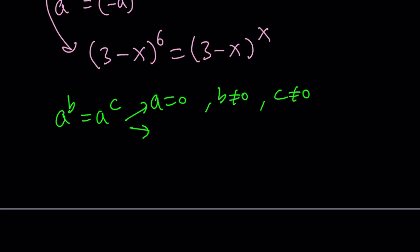The next thing we're going to look at is a can be negative 1, but in this case, b and c must be even, because negative 1 raised to an even power is always positive 1, so they're equal. Or a can be 1, and we don't care about b and c, because any power of 1 is going to be 1. And finally, we can safely say that b equals c, regardless of the a, right? Because a to the power b equals a to the power b.